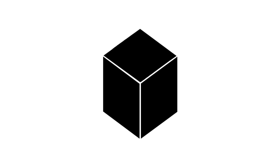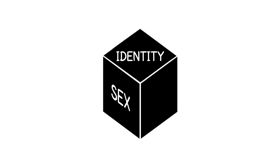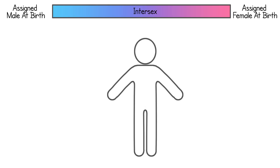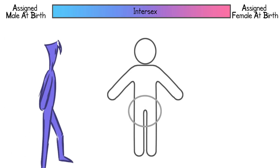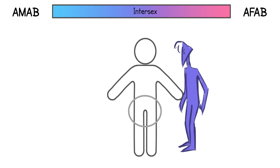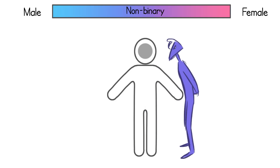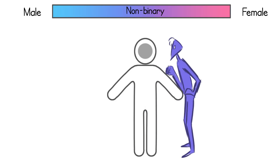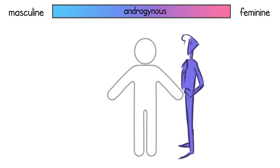So what is gender? A person's gender is made up of three aspects: their sex, their gender identity, and their gender expression. Sex describes the physical sex you were assigned at birth. Gender identity describes what you identify as on the inside, regardless of what sex you were assigned. Gender expression describes the way you express yourself — the way you dress, act, etc.